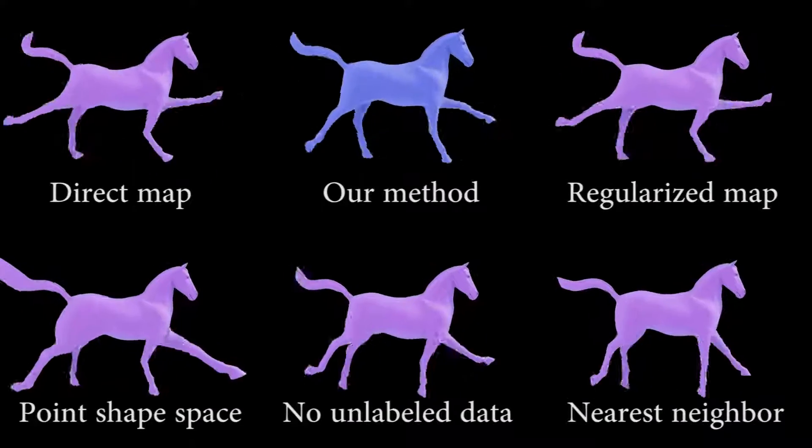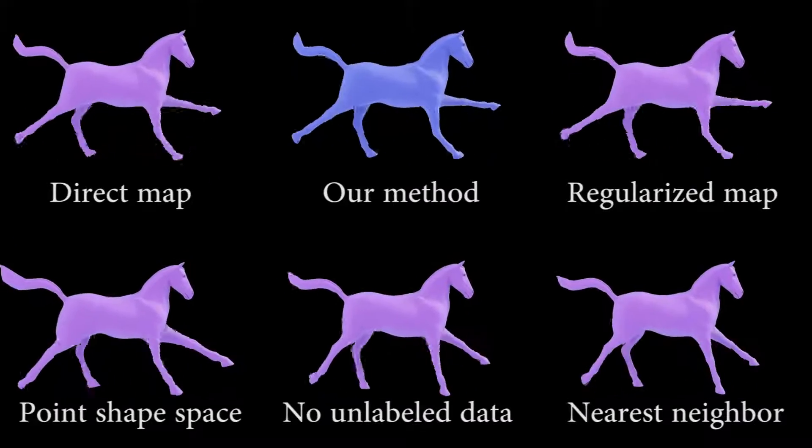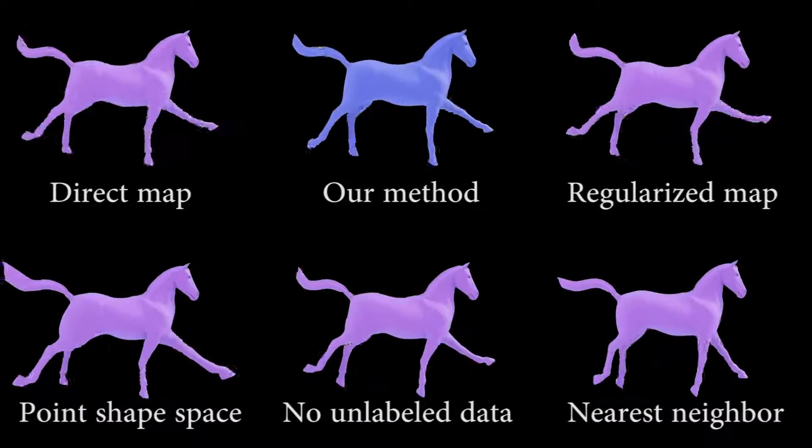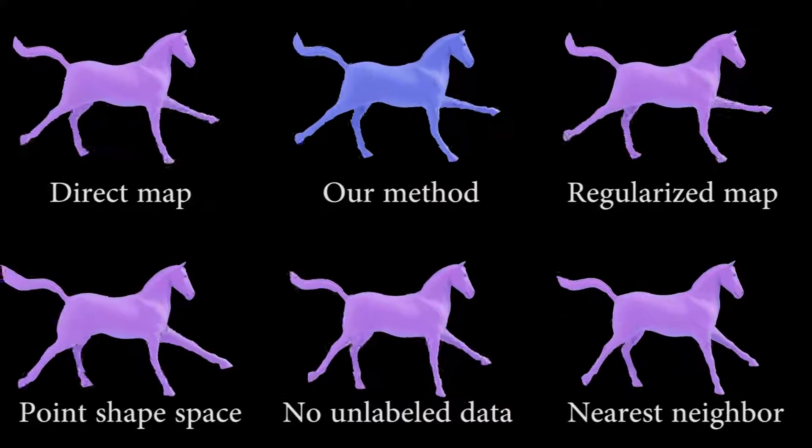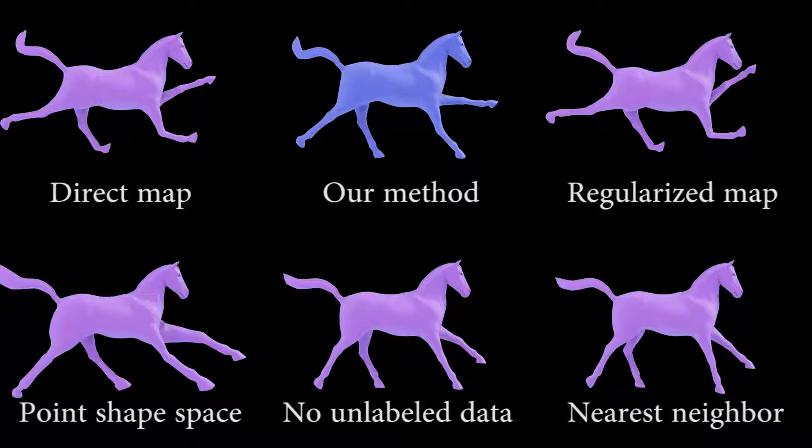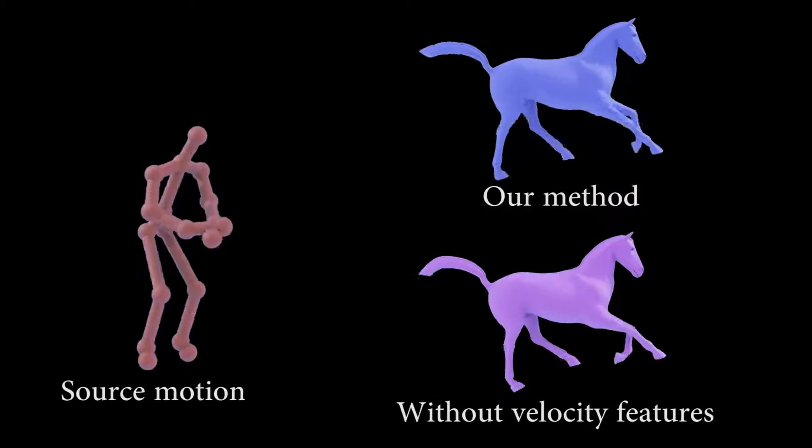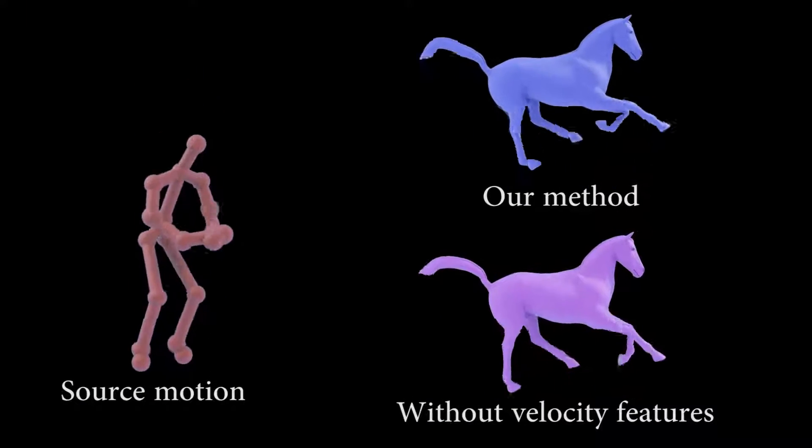To show that all our method components are important, we compare against a variety of alternative approaches. Nearest neighbour approaches, and not exploiting unlabelled data, do not produce smooth motion. Direct and regularised maps, as well as point-shaped spaces, produce shape distortions in the output. The jockey sequence shows the importance of using velocity features to maintain smooth motion through pose ambiguities.